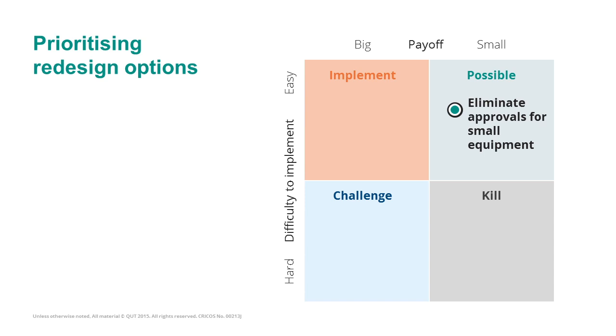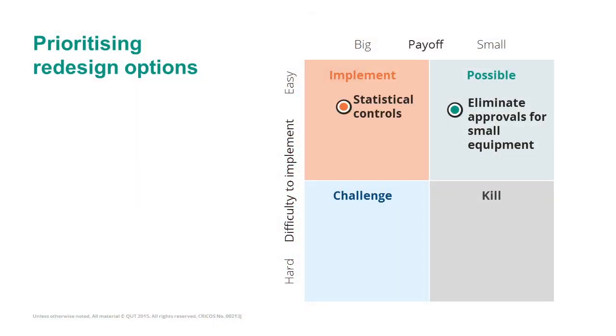The second redesign option is to replace altogether the per-case approvals for rental requests with the empowerment of the site engineer to rent anything they need, so long as they follow certain guidelines, while putting in place statistical controls. That option can have a larger payoff than the previous one and is also relatively easy to implement — we define guidelines for rental requests and set up statistical controls so the works engineer can double-check rentals.